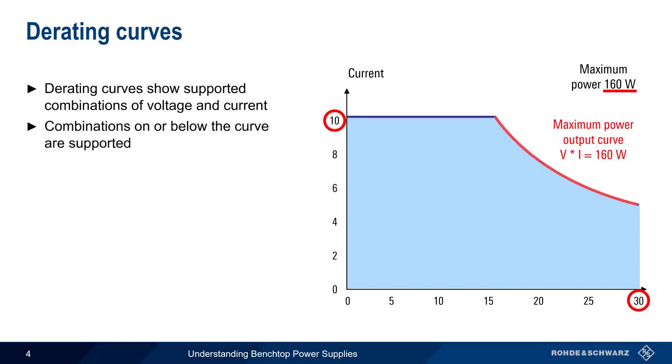Note that the curved region is bounded by something called the maximum power output curve. As the name implies, all points, that is, voltage and current combinations, that lie along this curve will yield the maximum output power, here 160 watts. Derating curves are normally included in the power supply specifications, or manual, or can be found on the manufacturer's website.